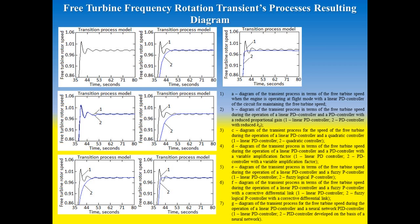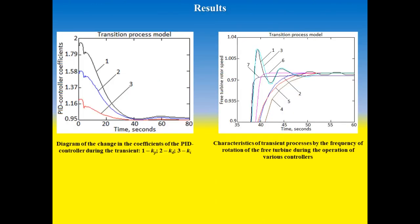The resulting figure shows the characteristics of the transient process in terms of free turbine frequency rotation as well as according to the developed neural network. Left figure shows diagrams of change in the values of the coefficients of the PID controller during the transient process. As follows from left figure, the transient process turns out to be very close to the reference process and the PID controller with a neural network provides a much higher quality of control than PID controllers of various architectures.